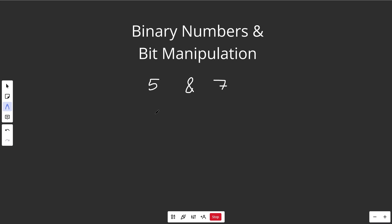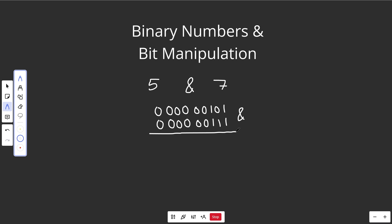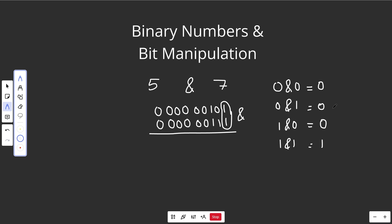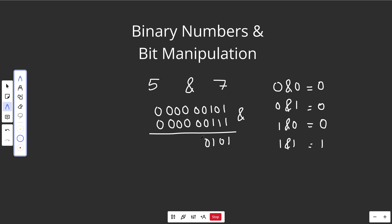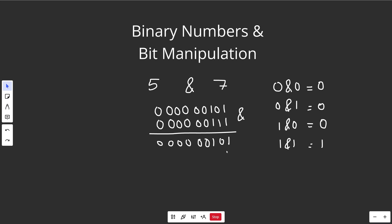Let's start with AND — 5 AND 7. The mapping is: 0 AND 0 equals 0, 0 AND 1 equals 0, 1 AND 0 equals 0, but 1 AND 1 equals 1. You just follow that rule over and over. So doing 5 AND 7 bit by bit: the result is 00000101, which interpreted as a signed integer is just 5. So 5 AND 7 makes 5.